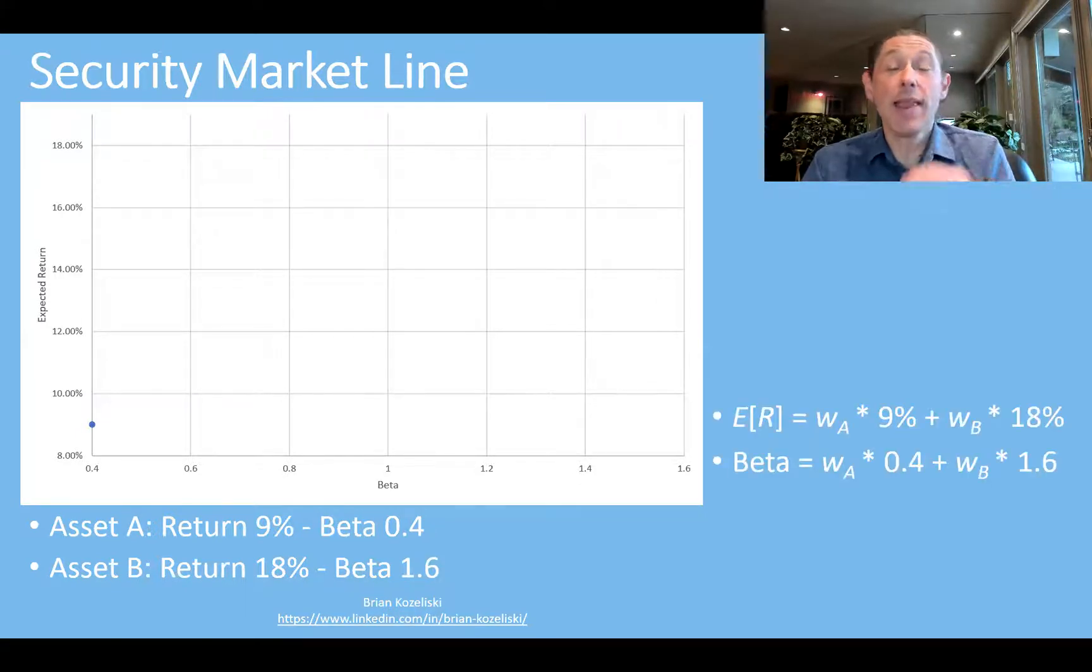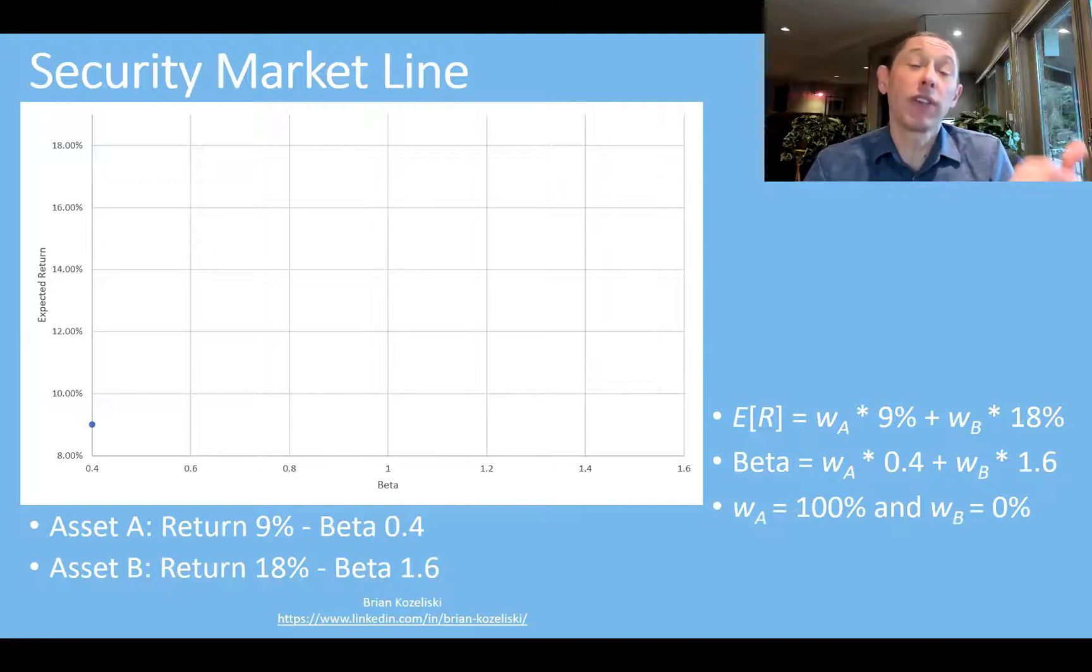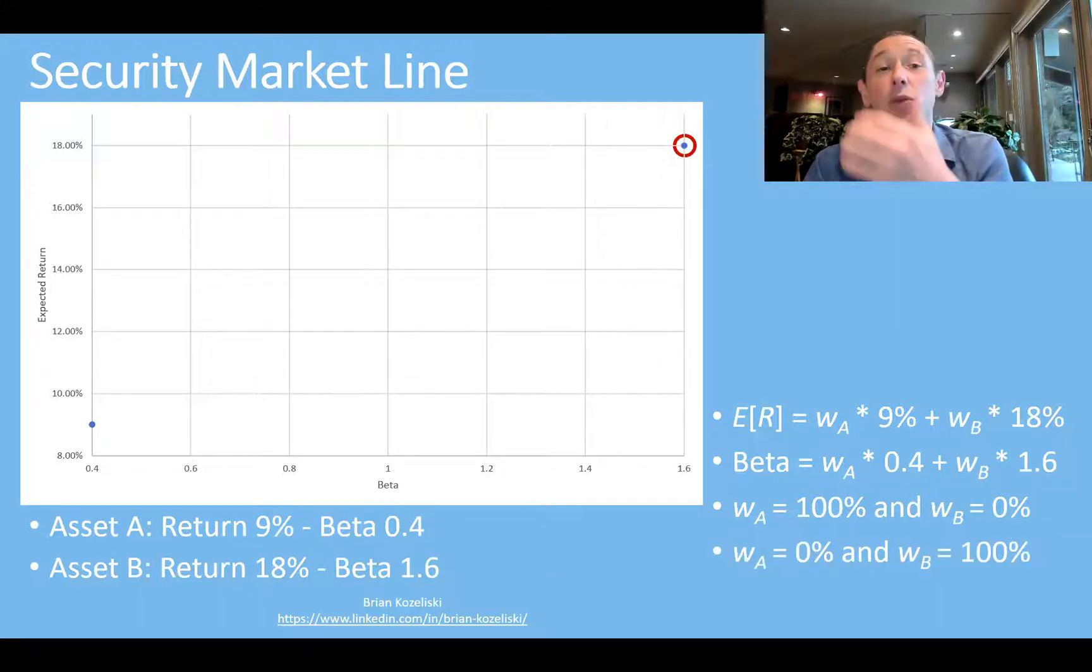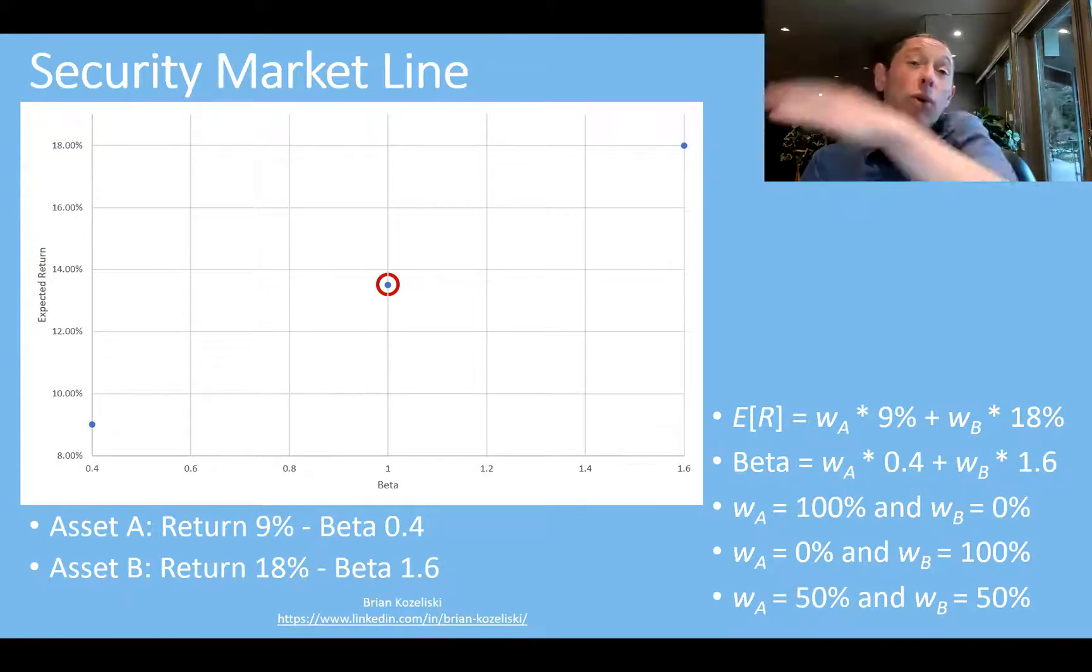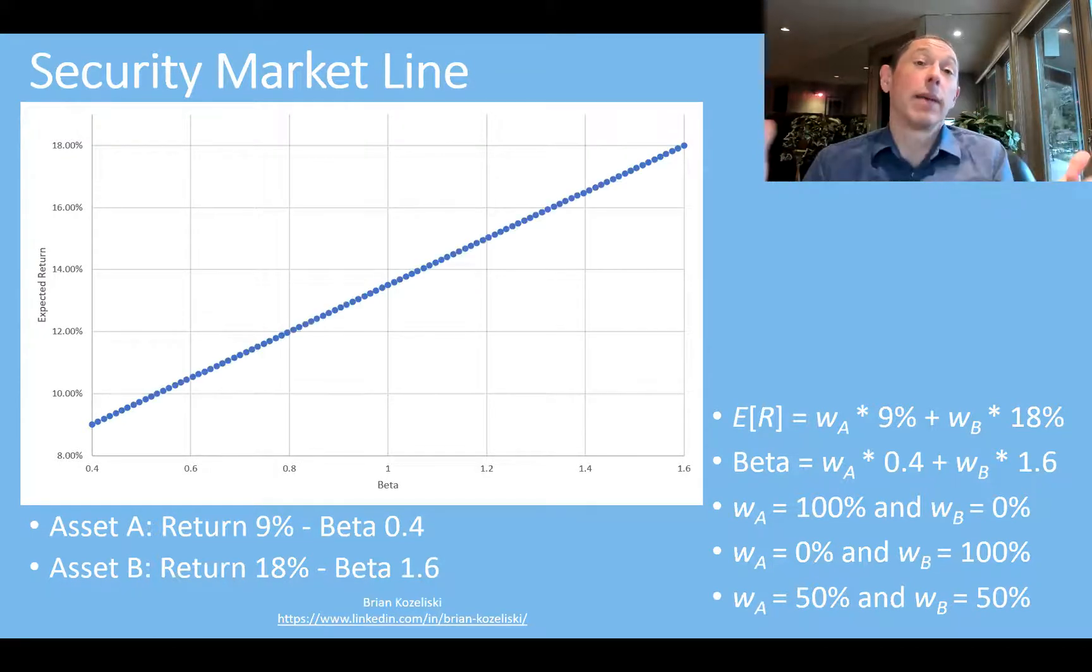So the expected returns and the beta are just a weighted average of the two weights of the assets you hold, what portion of those assets you hold. For example, if we have 100% in asset A, we would have this portfolio here with return of 9, beta of 0.4. If we held 100% in asset B, we'd have return of 18, beta of 1.6. If we had half and half, we would have this asset here with a beta of 1 and the return of 13.3. Now, if we just did this for every possible combination, we're going to get something like this.